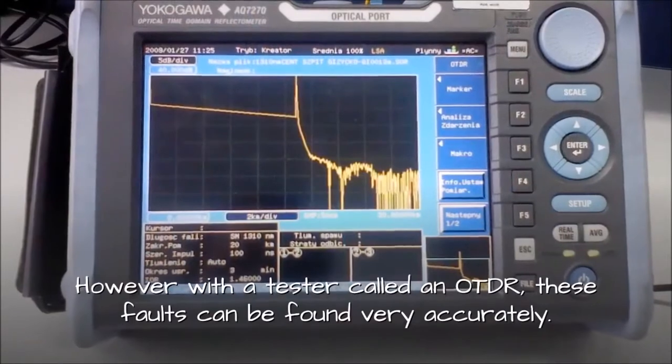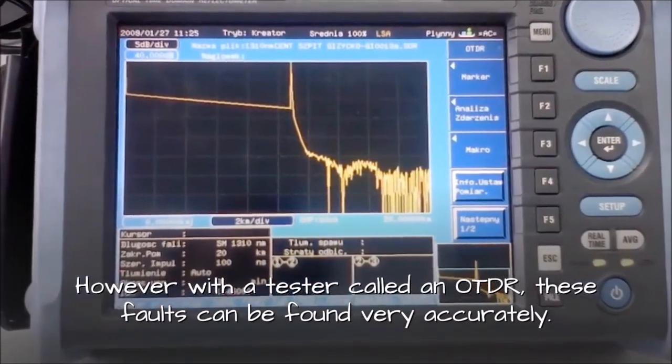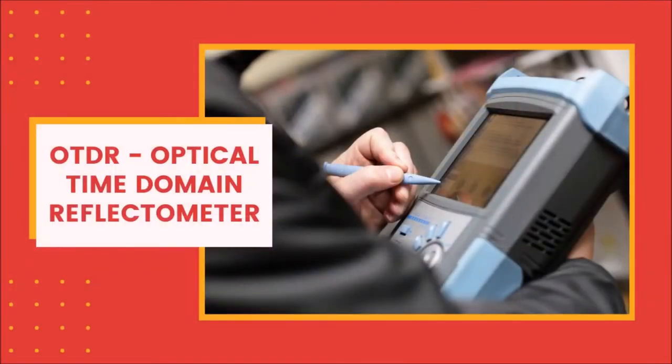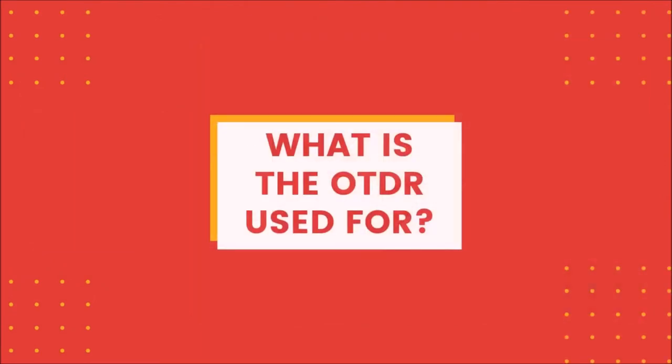However, with a tester called an OTDR, these faults can be found very accurately. OTDR: Optical Time Domain Reflectometer.